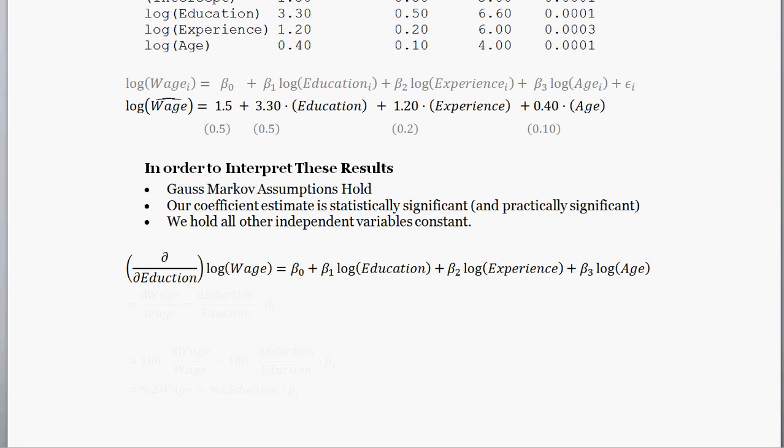To correctly interpret our beta 1 coefficient, the first thing we're going to do is take the differential of our model with respect to education. What happens when we take that first derivative with respect to education? Well, since we have log wage here, remember if you have log of x, the differential of log x is dx over x. So when we take the first derivative of log wages here, we have the change in wage divided by wages. Similarly, when we do it to beta 1 times log education, we get d education over education times beta 1.